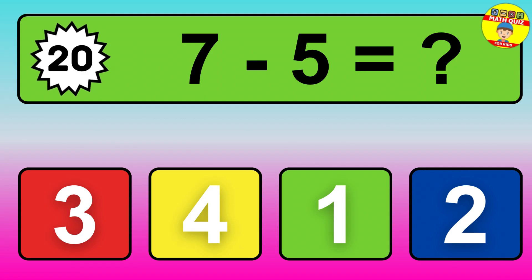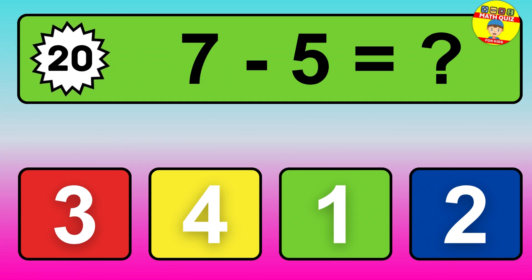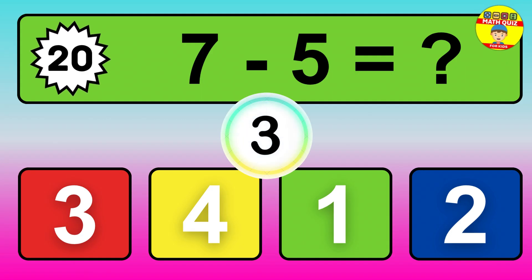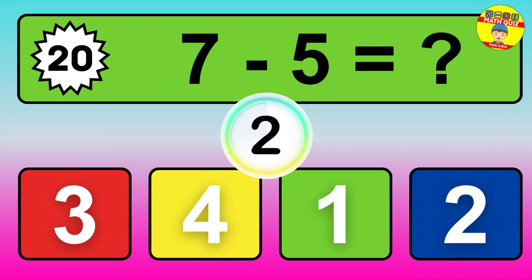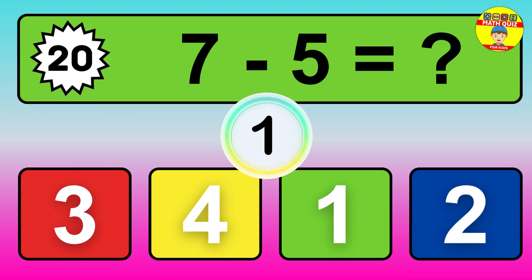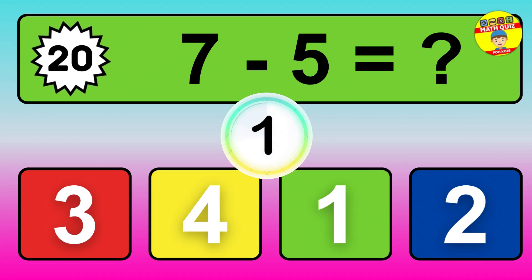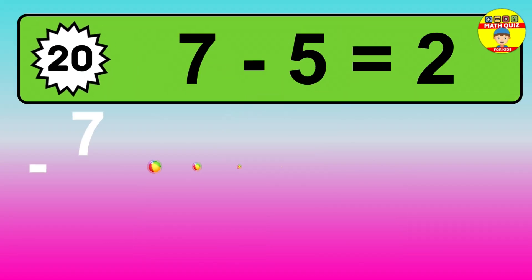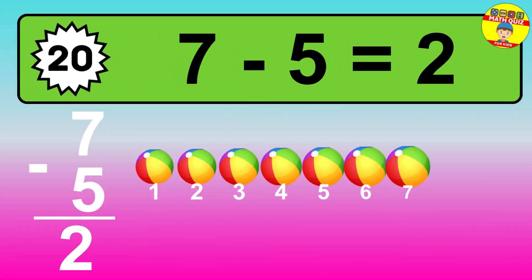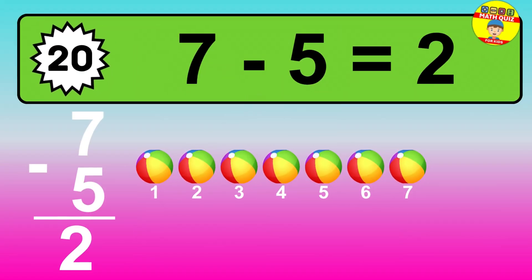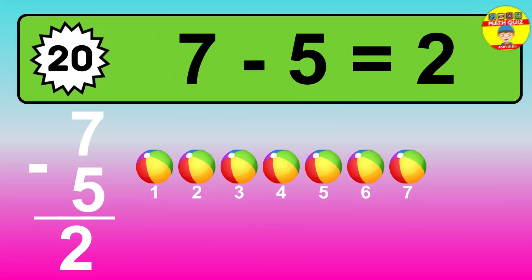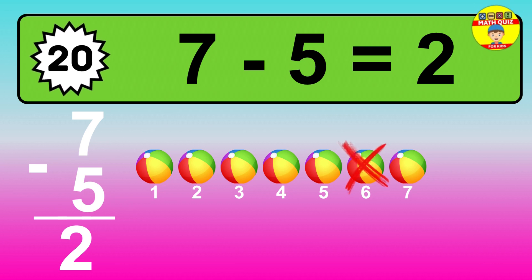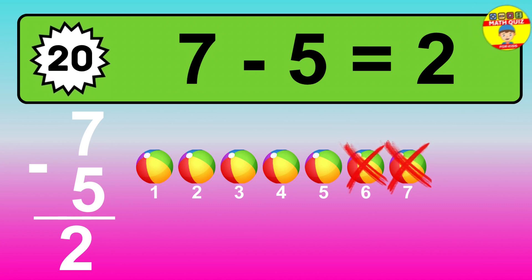Question 20: 7 minus 5 equals what? The answer is: 7 minus 5 is 2. Let's count it: 1, 2.